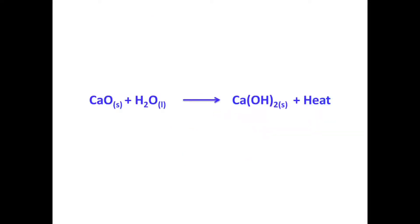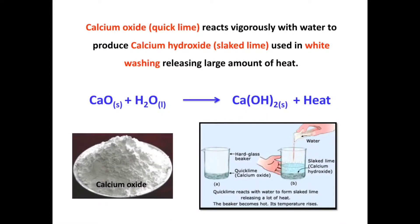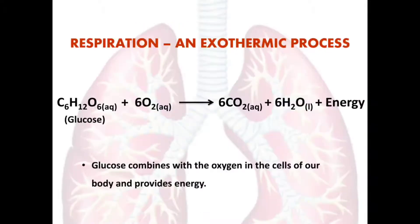Here is a chemical reaction between calcium oxide and water to form calcium hydroxide with the release of energy in the form of heat. Calcium oxide, known as quicklime, reacts vigorously with water to produce calcium hydroxide, known as slaked lime, which is usually used in whitewashing. This reaction involves the evolution of a large amount of heat, so it is an example of an exothermic reaction.